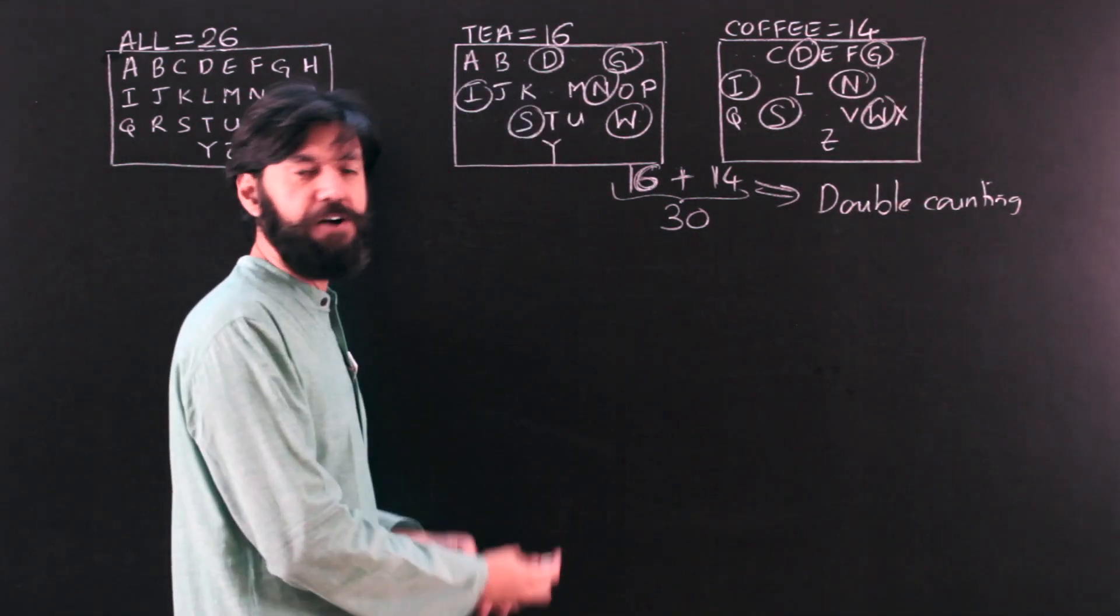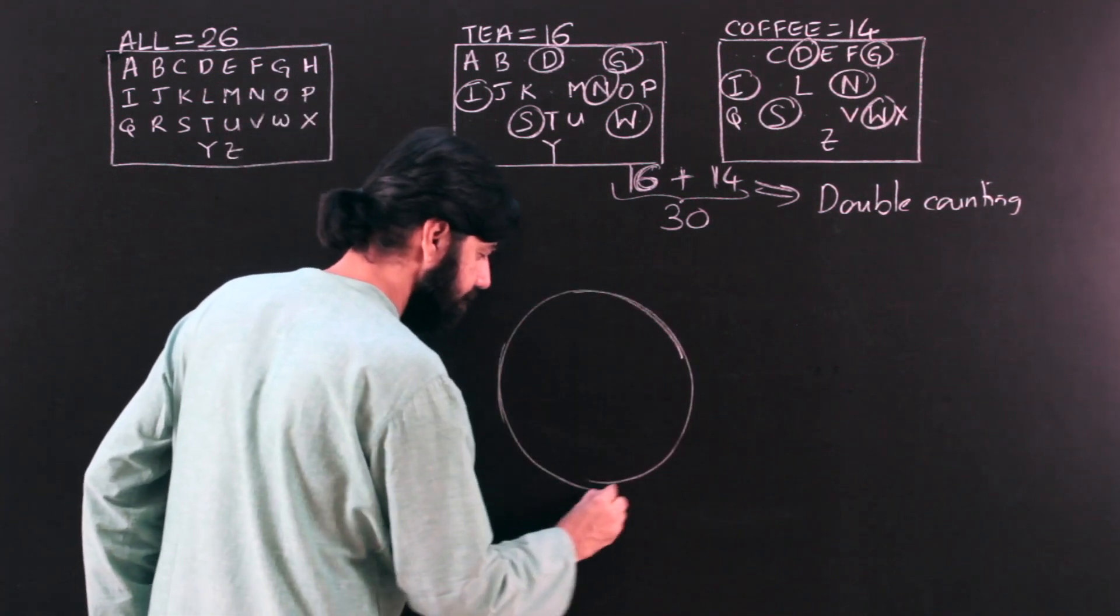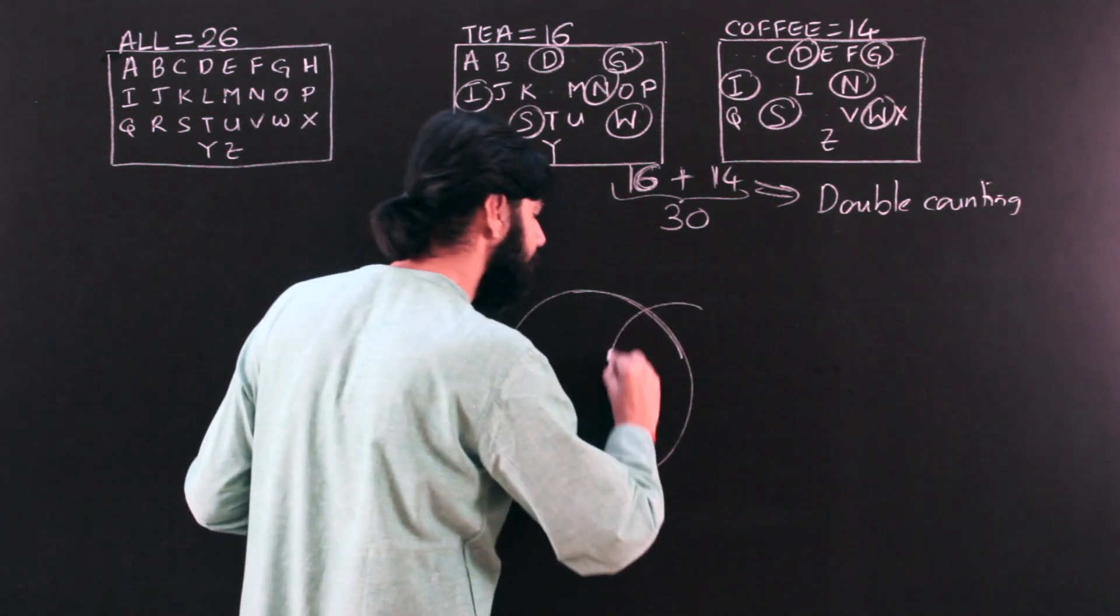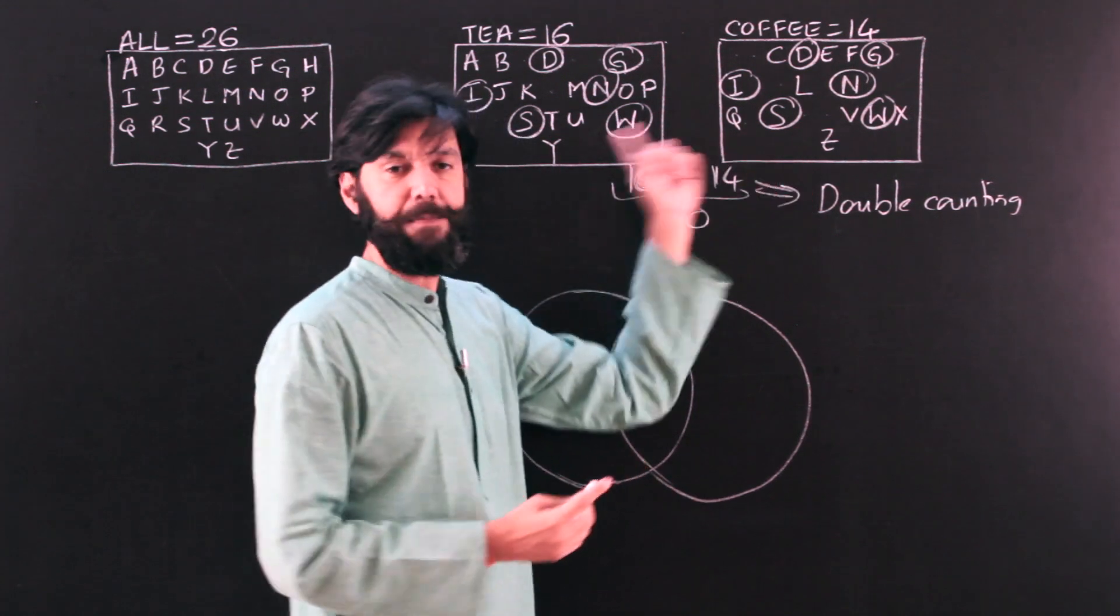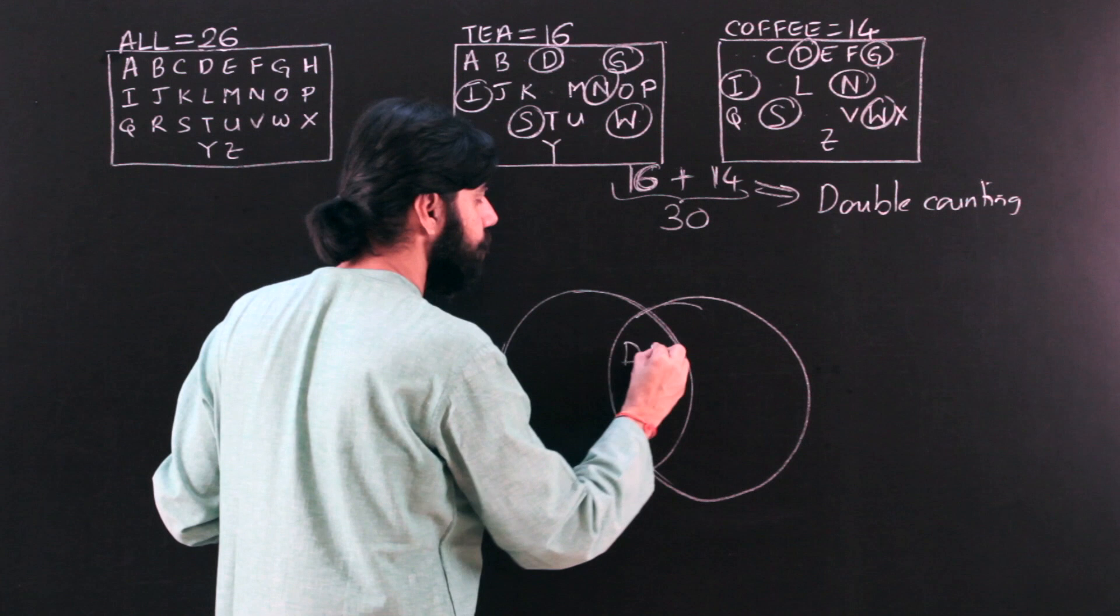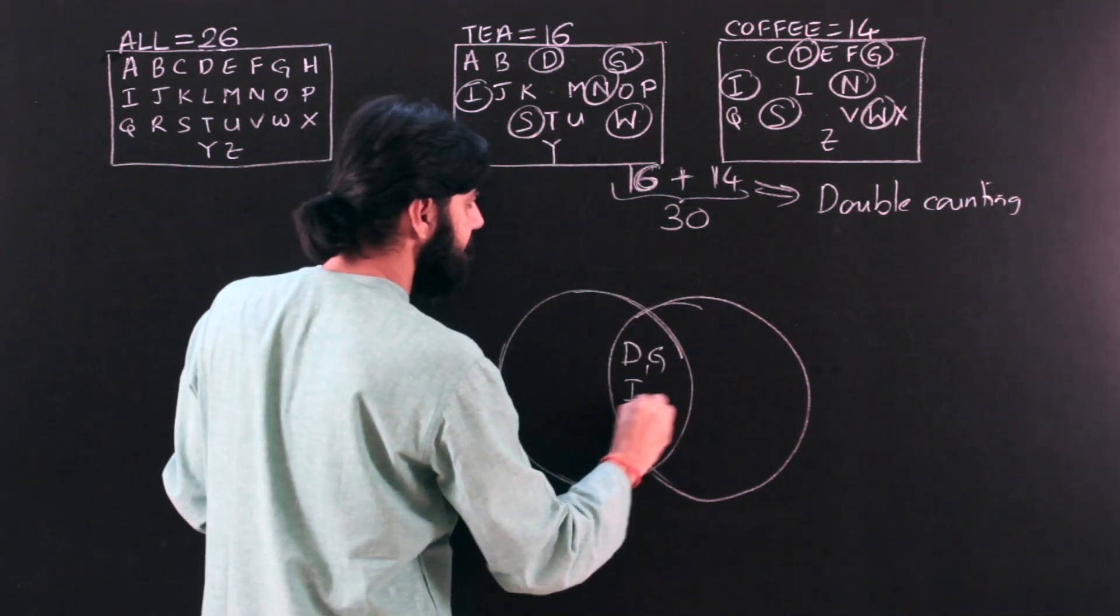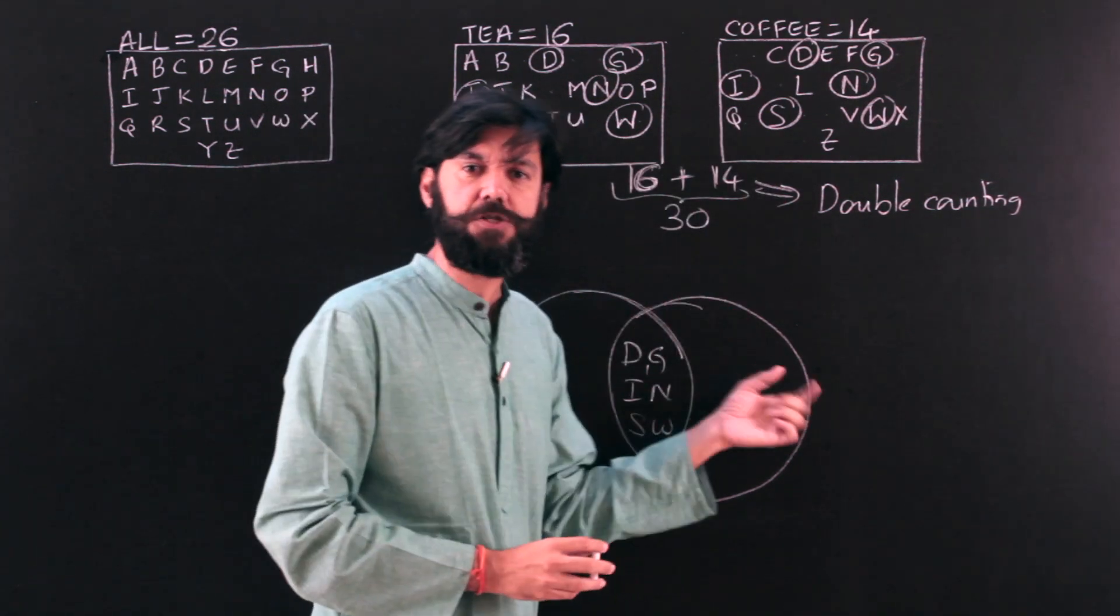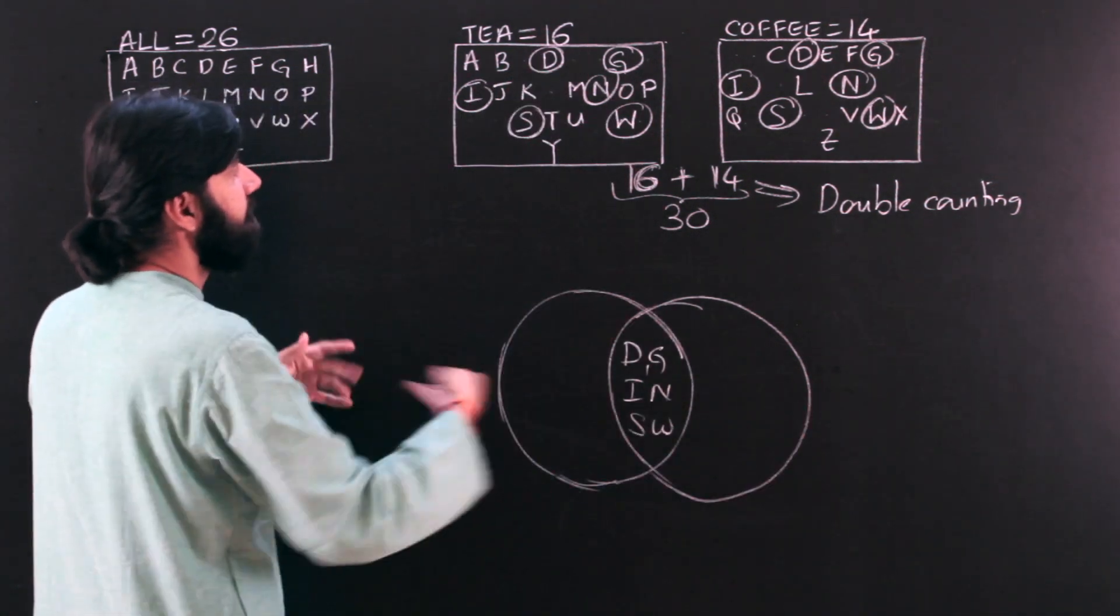So what is the better way of representing these individuals? Probably, this is a collection of items denoted by a set. The second set should overlap this. Why? Because there are elements which are common to both of them. So this is a better representation, and who is going to come in this overlap? D and G is there, I and N is there from the second row, from the third row I have S and W. So these are the individuals who are belonging to both the sets, this as well as this.